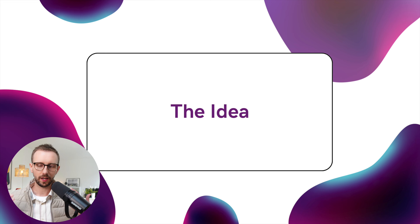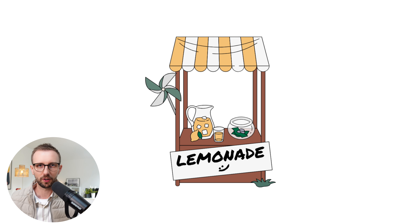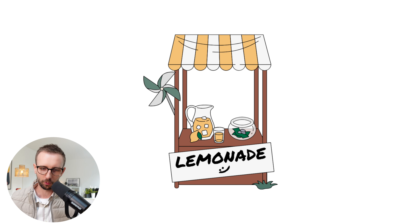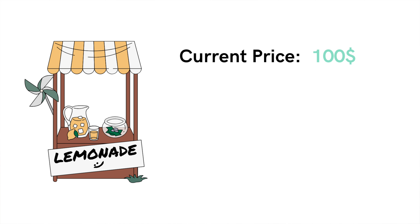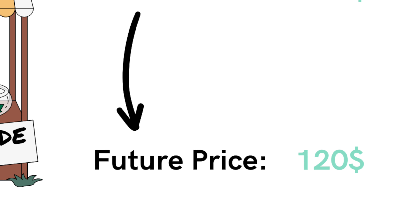So what's the idea here? I'm going to use a lemonade stand to illustrate what we as investors are attempting. Let's assume the person running the lemonade stand offers you to buy it for $100. How do you determine whether this is an attractive offer? Well, you will have to come up with an idea of what this lemonade stand could be worth in the future. Let's pretend you think it will at some point be worth $120.